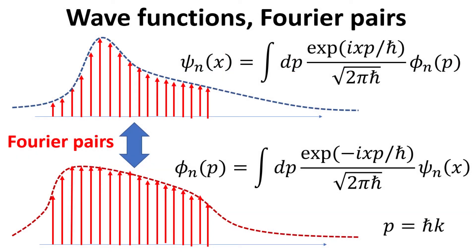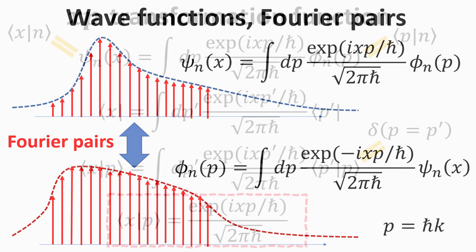Here is a pictorial representation of the two wave functions, and we know that they are related to each other by Fourier transformation. We write their explicit relations as shown. Often you might see this written in terms of the wave vector k instead of momentum p, but they are equivalent if one relates momentum p to the Planck constant multiplied by the wave vector k.